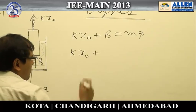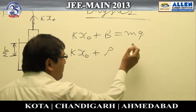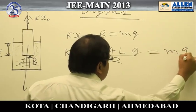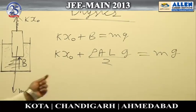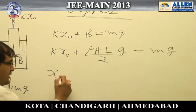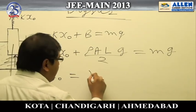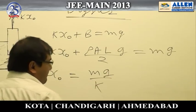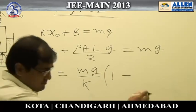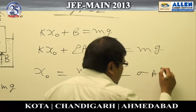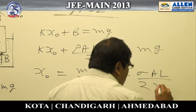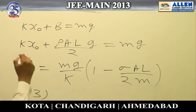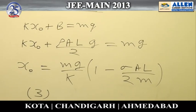Substituting the buoyancy force as ρAL/2 times g, and setting it equal to mg, we solve for x₀. We get x₀ = (mg/k)(1 − ρAL/2m). This is option number three, so option 3 is our answer.